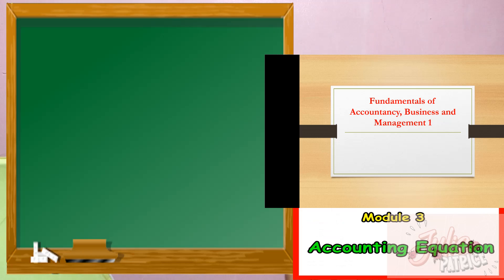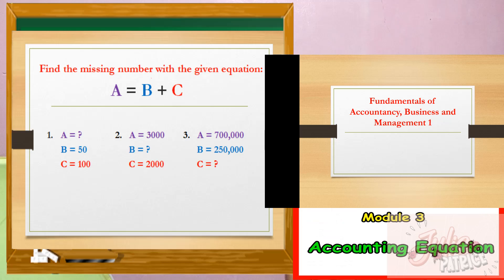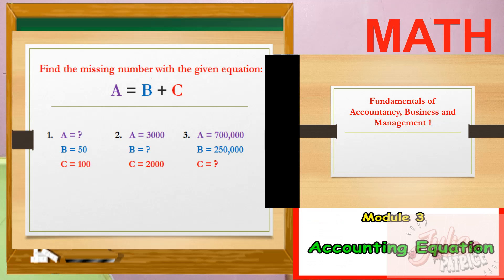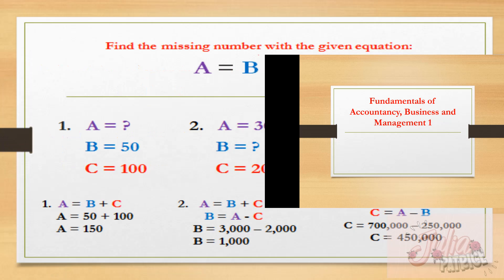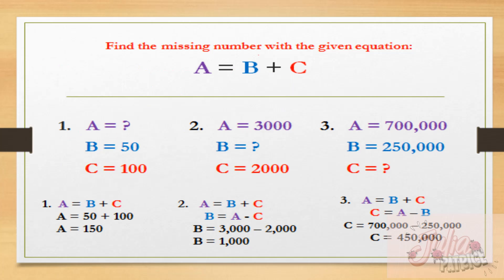Before we start our discussion, on your notebook, I want you to apply the mathematical concept in algebra, which is finding the unknown with the simple equation A equals B plus C. You may pause this video while you are answering. Now let's check your answer. In number one, A is missing. So we simply add B and C, which is 50 and 100, and we come up with 150.